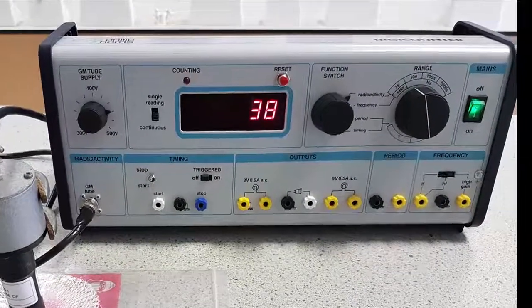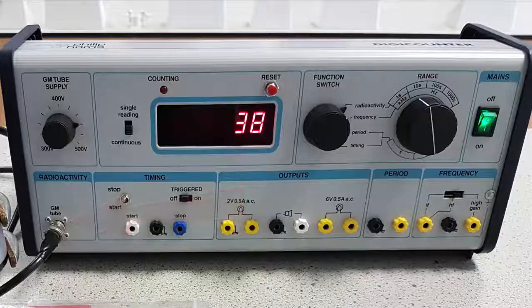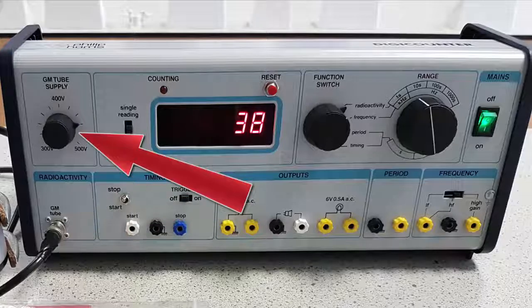So let's take a look at the settings. The GM tube is connected to the digi-counter here and above it I've got it set to 460 volts.